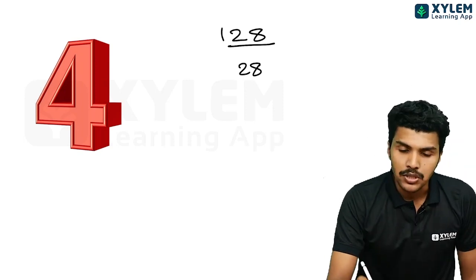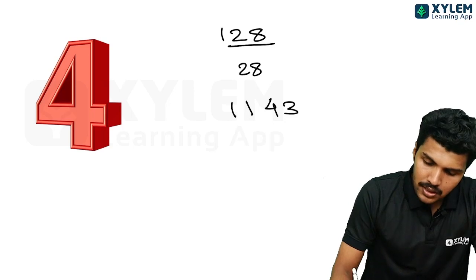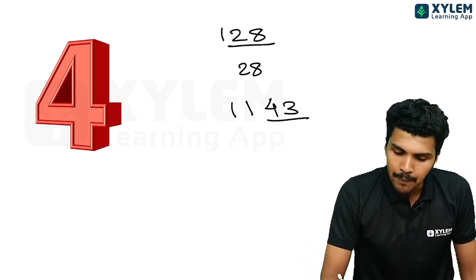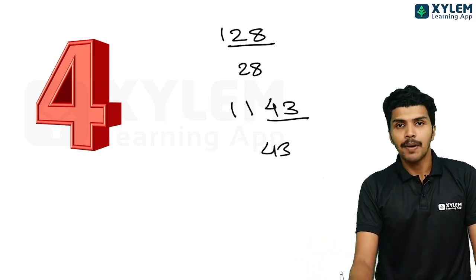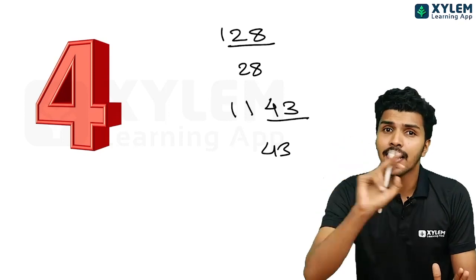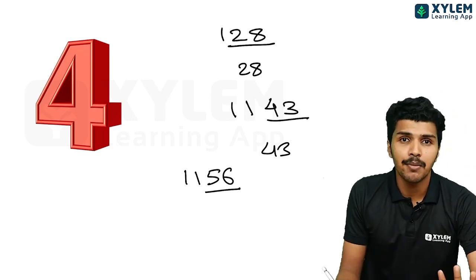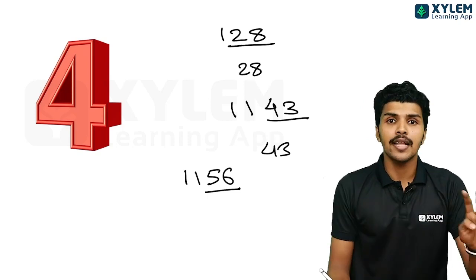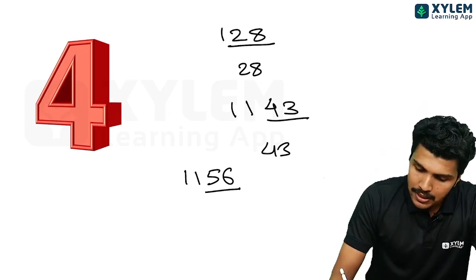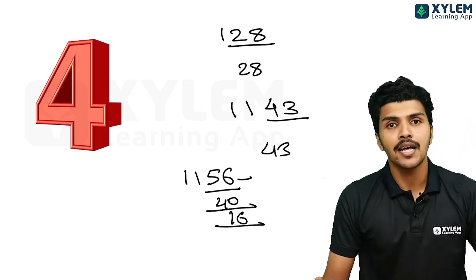For divisibility by 4: a number is divisible by 4 if the last two digits form a multiple of 4. For example, 54 — check if the last two digits are a 4 multiple.